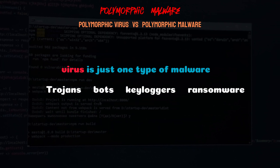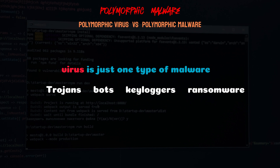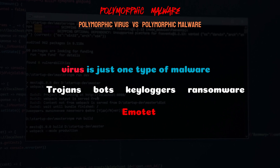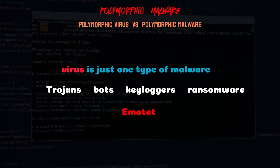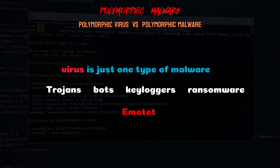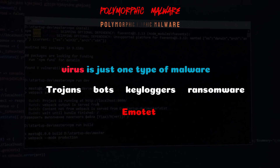For example, a polymorphic malware like Emotet is a banking trojan that steals sensitive information while misleading cybersecurity tools to hide.